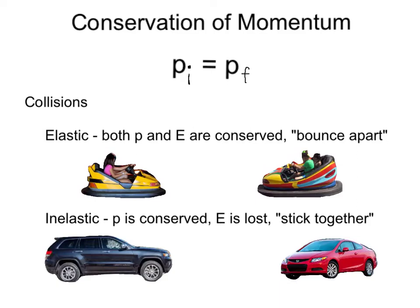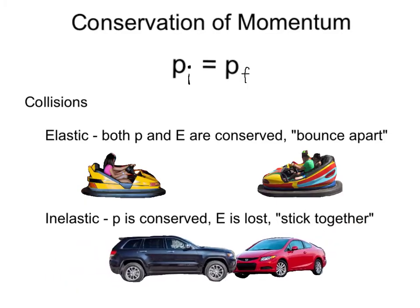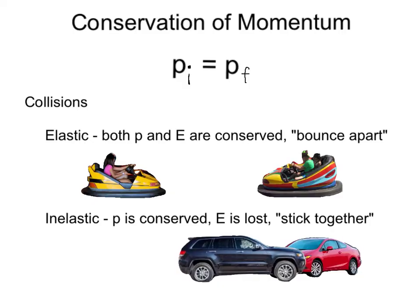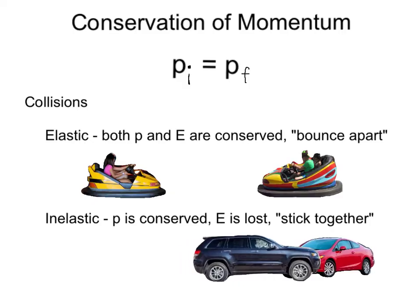The second type of collision is an inelastic collision. This is where momentum is conserved but energy is lost, typically due to heat, structural damage, and sound. This is a collision in which objects typically stick together. If we had these two cars coming at each other and colliding, they would hit and stick together — you'd hear the collision and there would be energy lost to sound, heat, and structural damage.